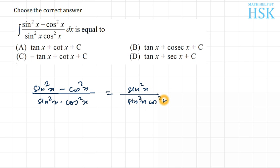So this sin²/sin² cancels out, this cos²/cos² cancels out, and I'm going to get this as 1/cos²x minus 1/sin²x.